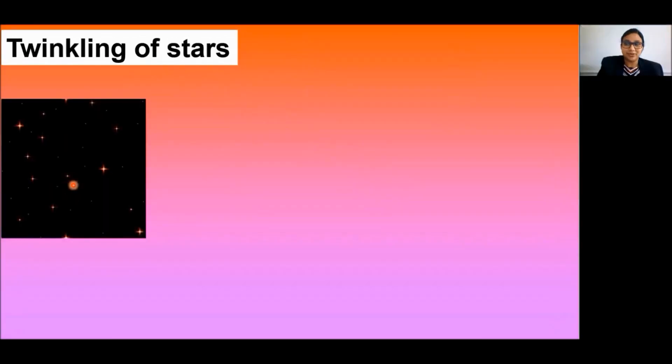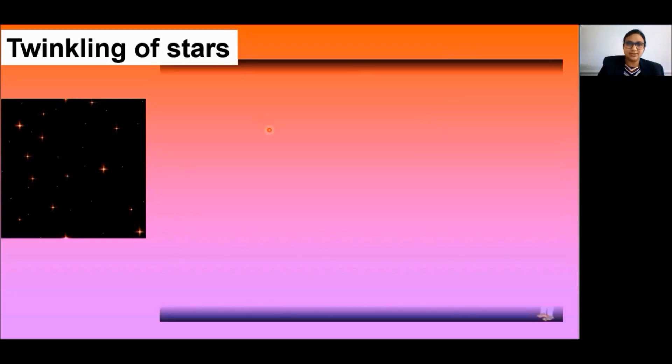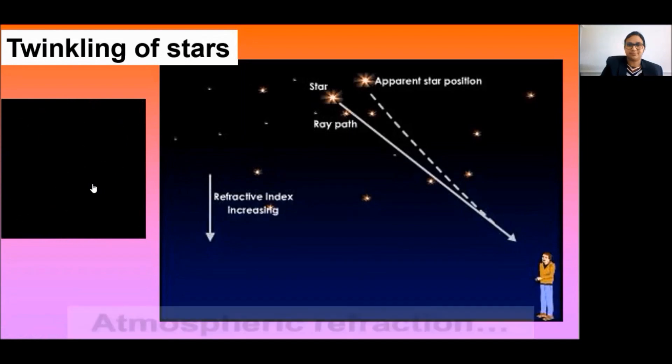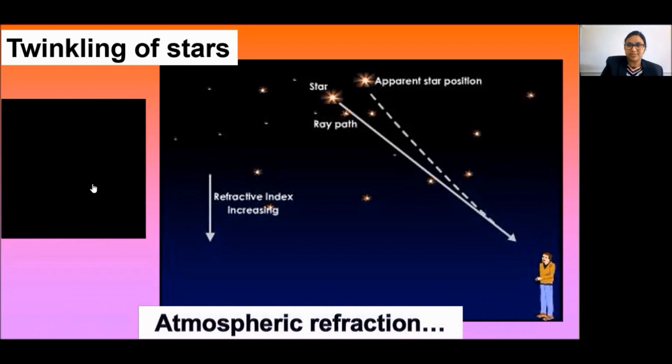The twinkling of stars is due to the atmospheric refraction of starlight. Since the stars are very distant, they are considered as point sources of light. As the path of light ray coming from the sun goes on varying slightly, the apparent position of the star fluctuates and the amount of starlight entering the eye flickers. Therefore, the stars sometimes appear brighter and sometimes fainter, which is the twinkling effect.